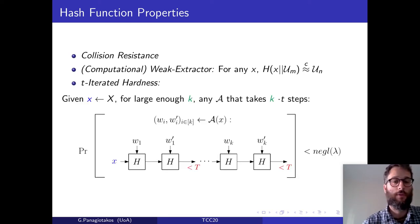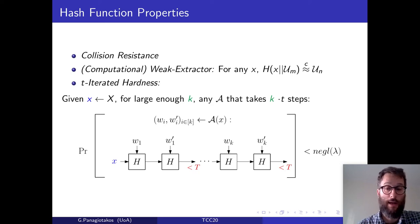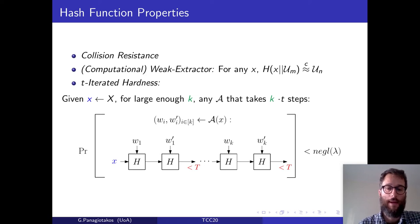The third property we introduce is t-iterated hardness. At a high level, this property says that it should be hard to generate a sequence of small hashes. More formally, given a randomly sampled string x and for large enough k, any adversary that takes k times t steps should generate a list of strings w_i, w_i', such that iteratively hashing these strings starting from the challenge string x has the property that every second hash is smaller than target T, with probability negligible in the security parameter lambda. The difference from iterated sequential functions is that at every iteration the adversary has to solve a search problem — finding strings w_i, w_i' — instead of just computing a function.